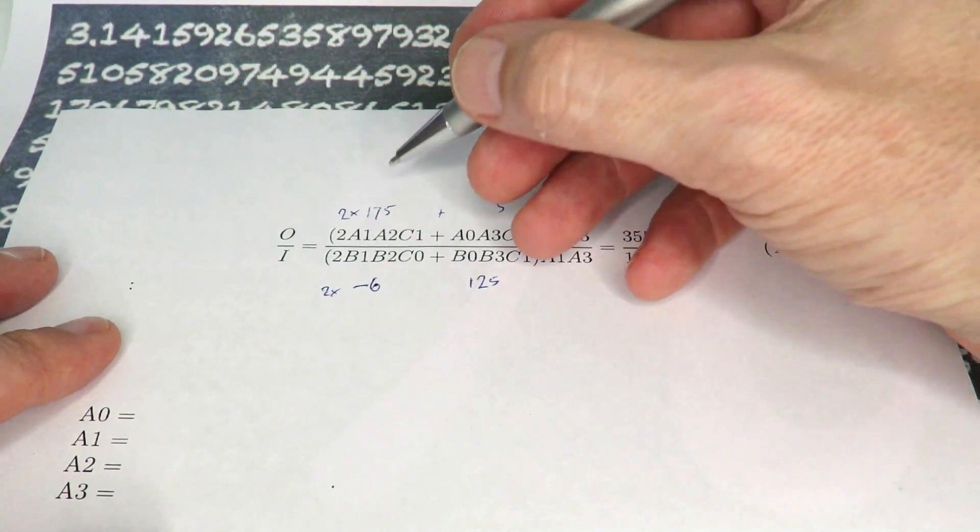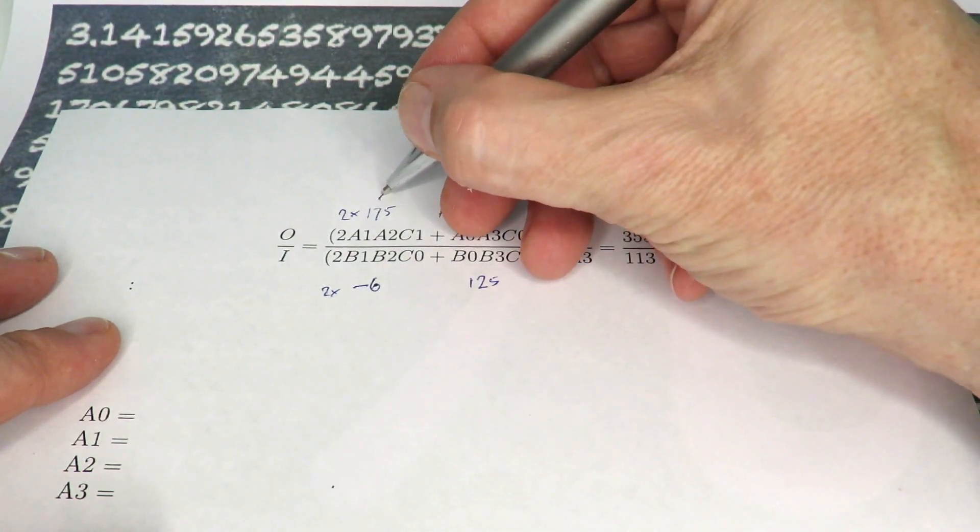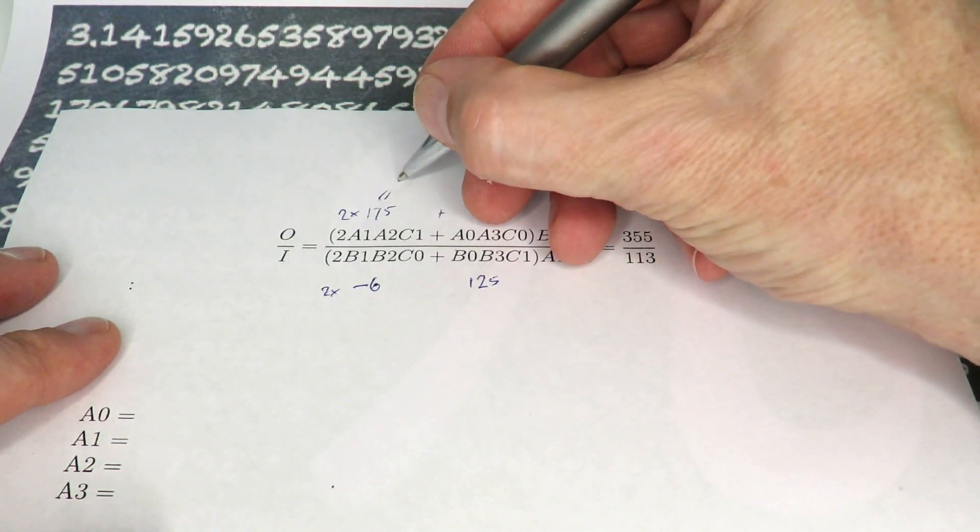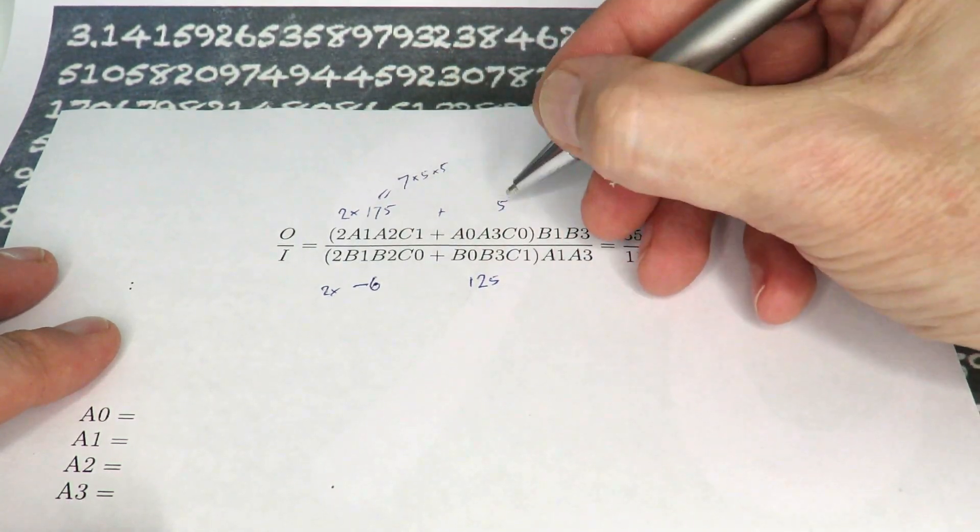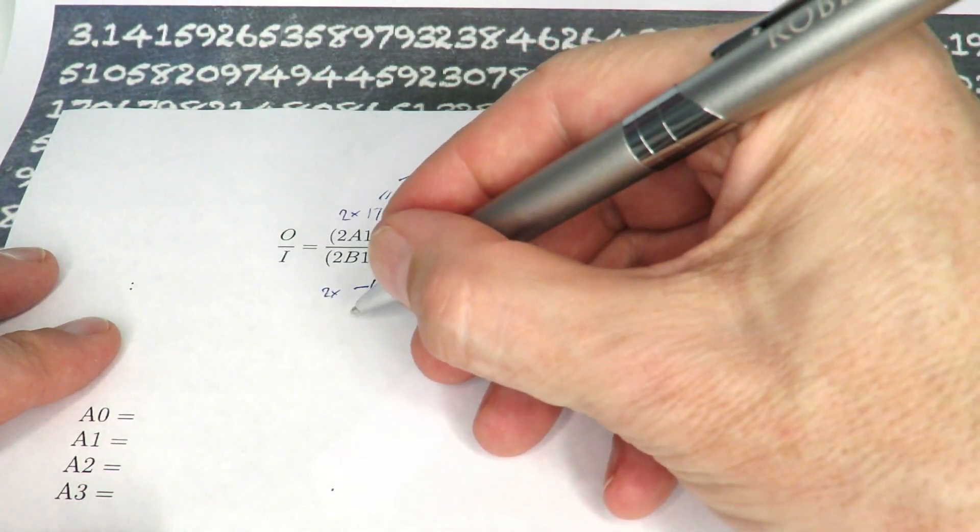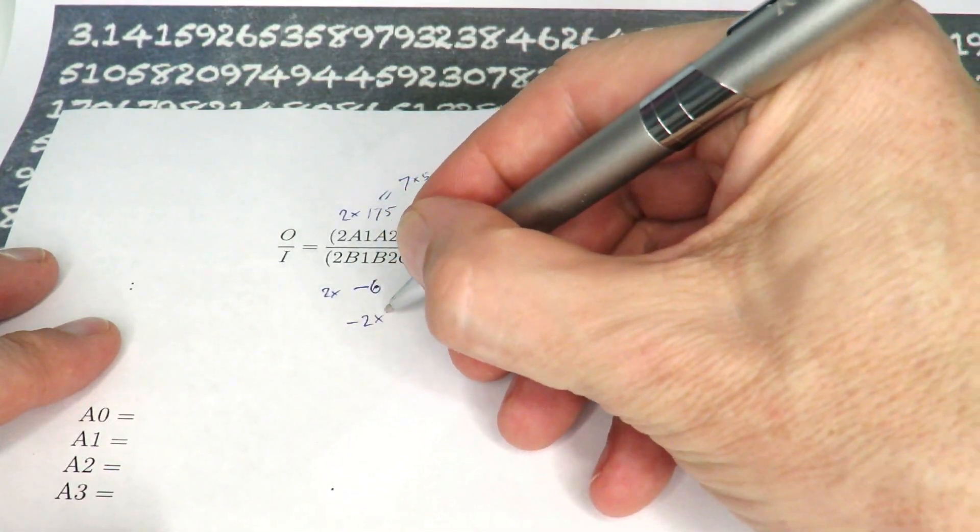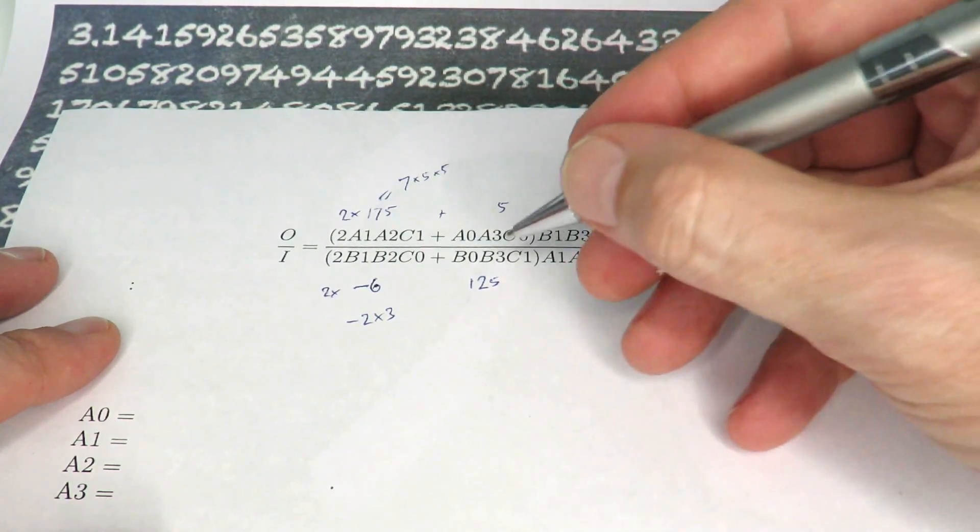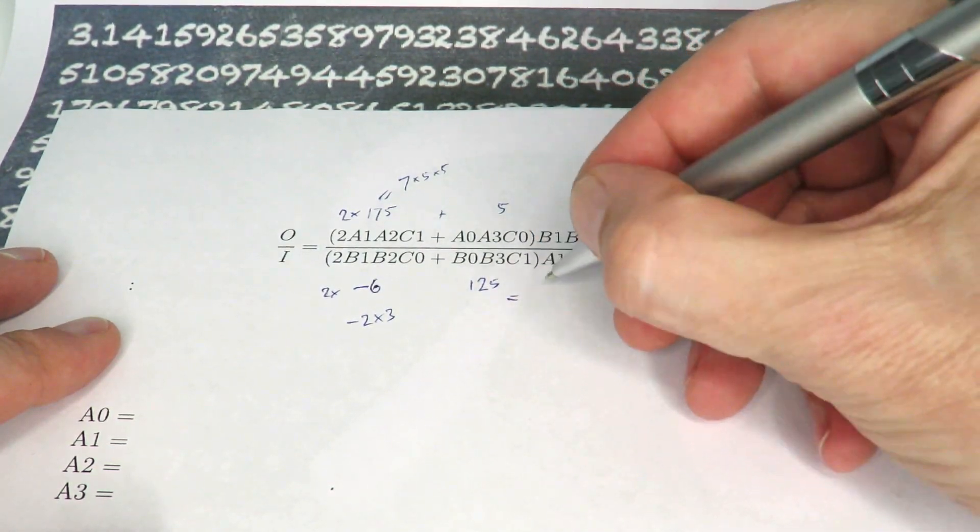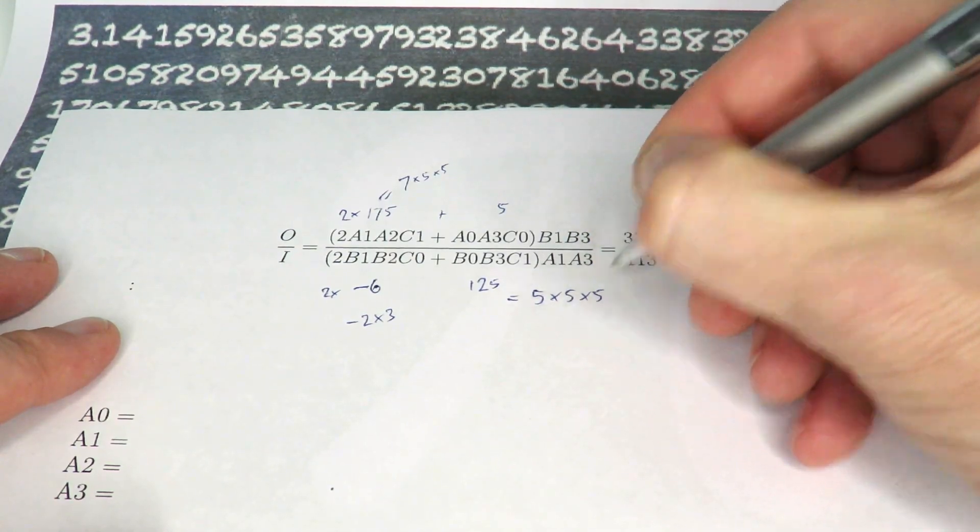Now of course these numbers that we're choosing do have to be products of the Lego primes, that's 2, 3, 5, and 7. So for example, 175 is equal to 7 times 5 times 5. Five is equal to 5. Minus 6 is minus 2 times 3, where the minus is a reversal of direction. And 125 can be written as 5 times 5 times 5.